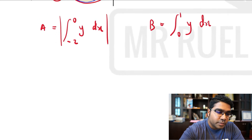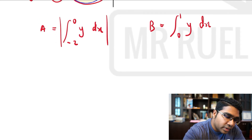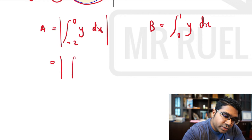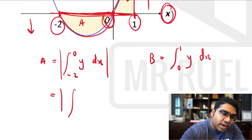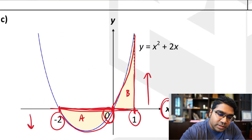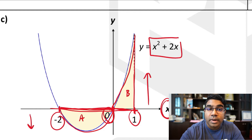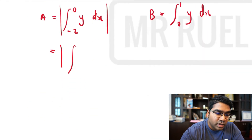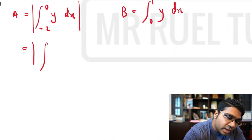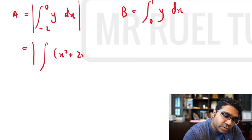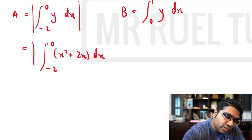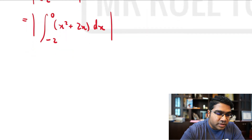Let's find the areas. The area for A will equal the modulus of the integration of y, where y is x² + 2x. So we take the modulus of the integral of x² + 2x with respect to x, with limits of negative 2 to 0.